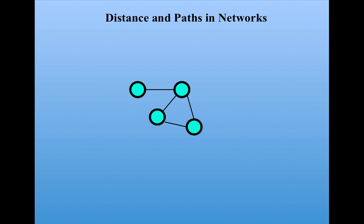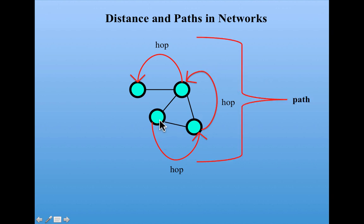Now let's look at the notion of distance and paths in networks. When one node can reach another node via one link, we call that a hop. So you can hop from this node to this node in one link. We have a connection of hops here, a sequence of hops, which produce a path. So a path from, say, this node here to this node here goes over three hops.